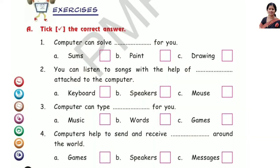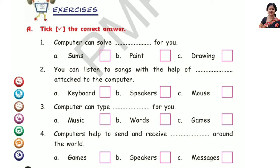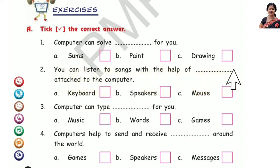First, take the correct answer. Number 1: Computer can solve dash for you. Option A — Sums. Number 2: You can listen to songs with the help of dash attached to the computer. Option B — Speakers.